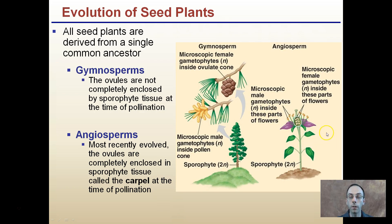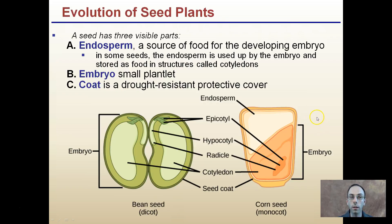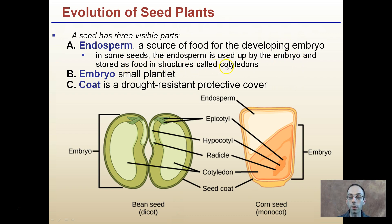The sporophyte is 2N, and the pollen and egg are each N. As for the seed itself, it has three visible parts. The endosperm is a source of food that the developing embryo needs. In some seeds, the endosperm is used up by the embryo and stored as food in structures called cotyledons.